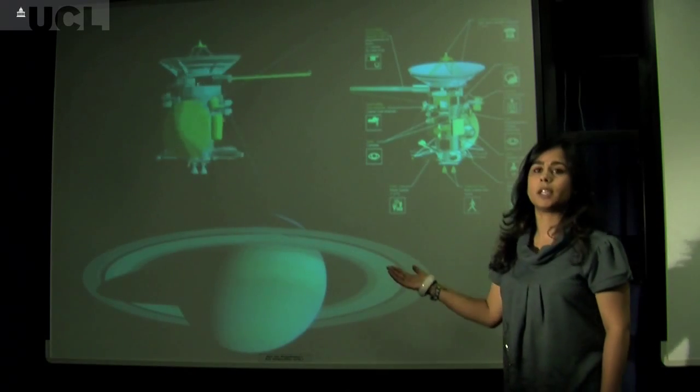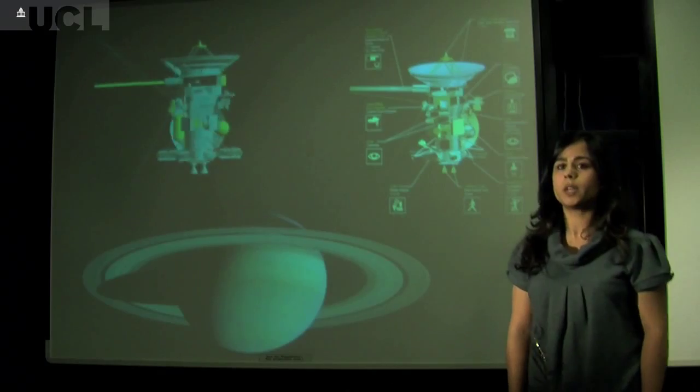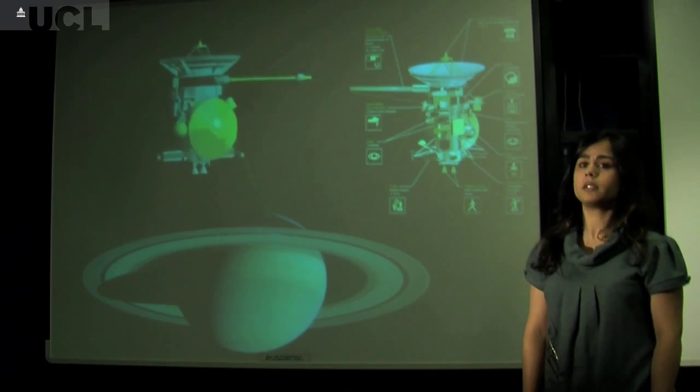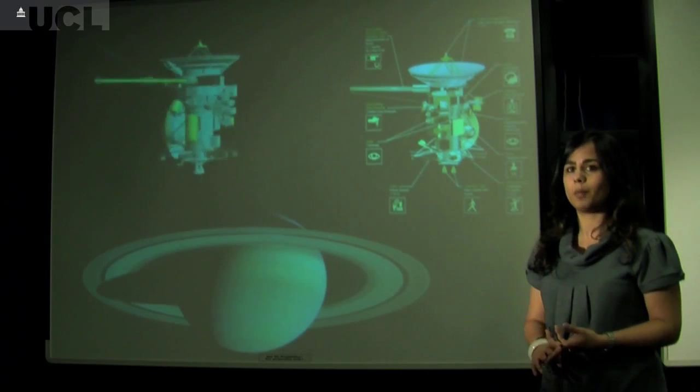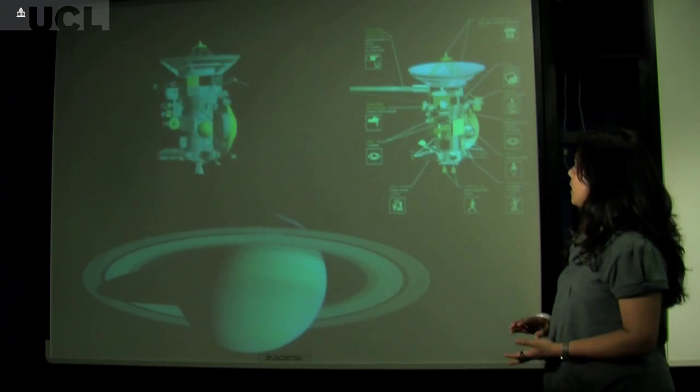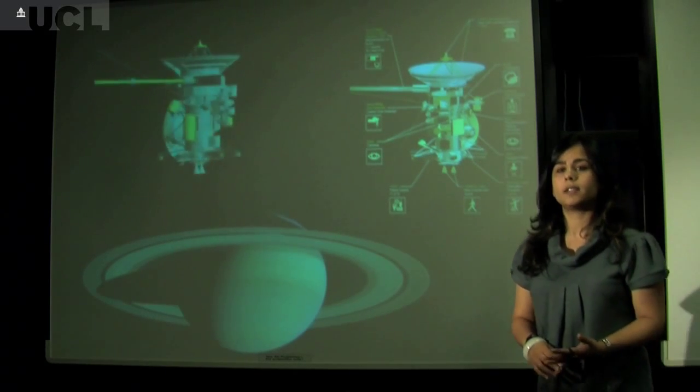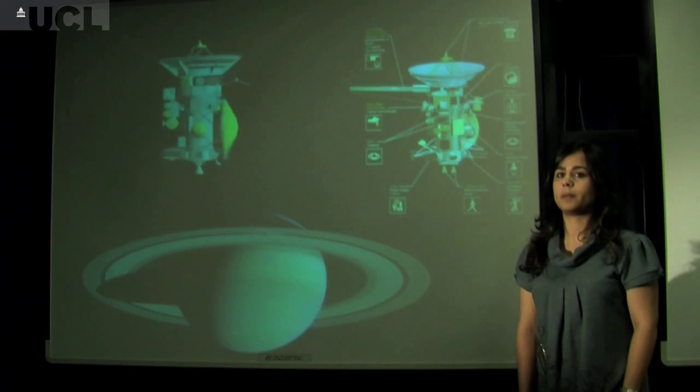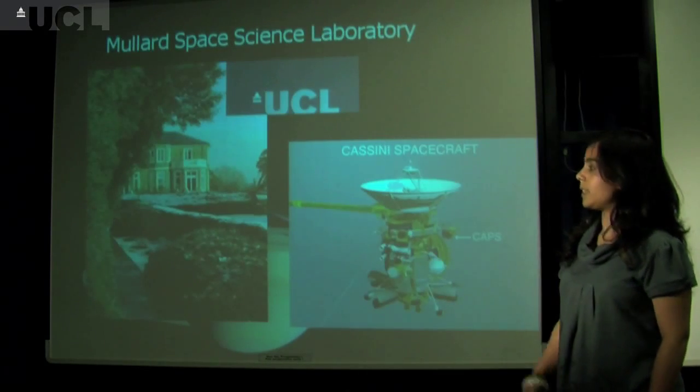Cassini is really interesting. It's got 12 instruments on board and these instruments all do different things. There's a dust analyzer, cameras, infrared cameras, a magnetic field data analyzer, and a Cassini plasma spectrometer.